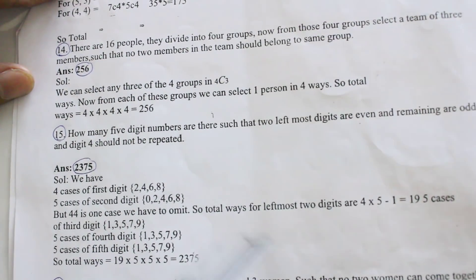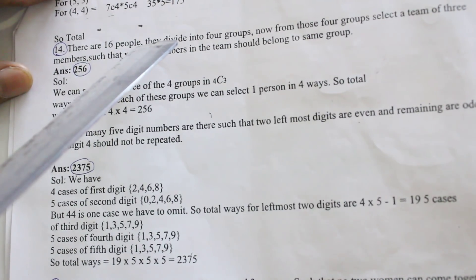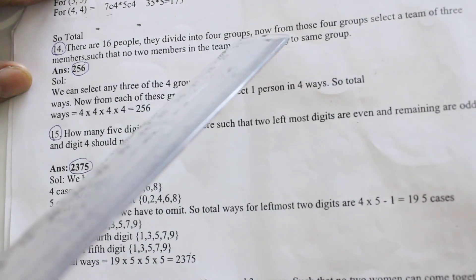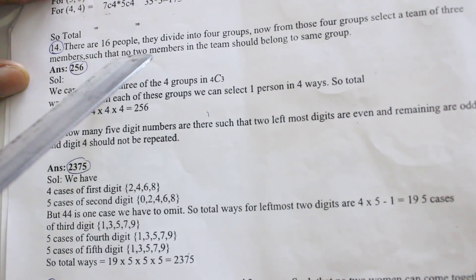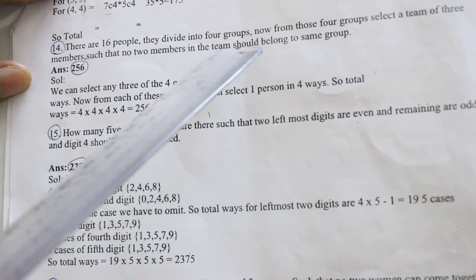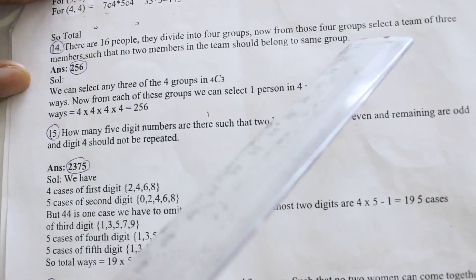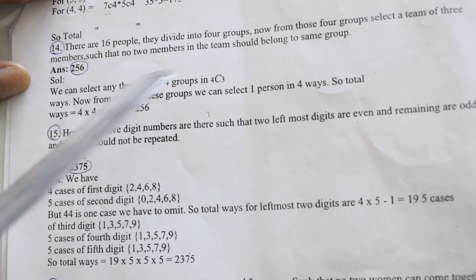Next one, 14th one: There are 16 people, they divide into 4 groups. Now from those 4 groups select a team of 3 members such that no 2 members in the team should belong to same group. Answer is 256.